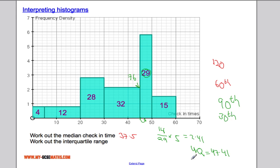So let's work out where that is. 4 and 12 is 16. So I need 14 of these 28 people. So we'll do 14 over 28, and multiply that by the class width, which is 10. So we get 5. So the lower quartile is 25. So the interquartile range is the upper quartile, take away the lower quartile, so 47.41, take away 25, gives us 22.41. And that is how you work out the median and interquartile range for a histogram.